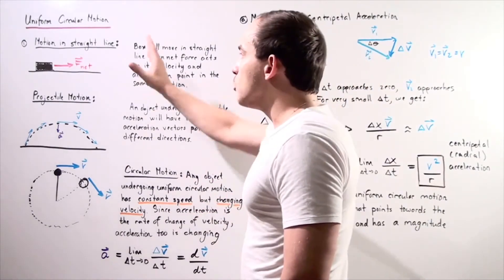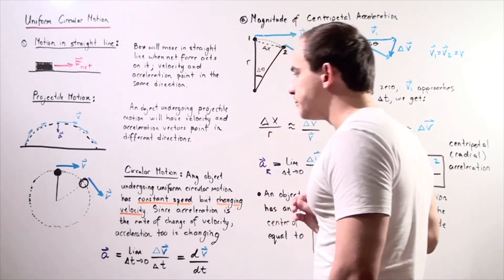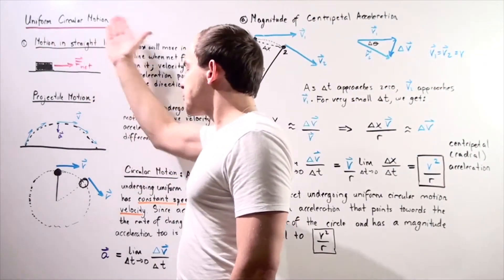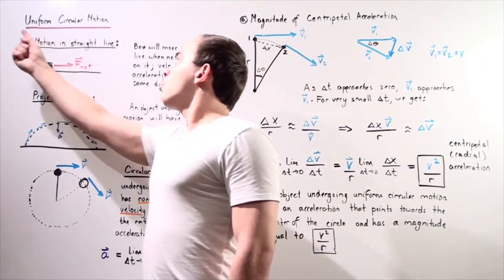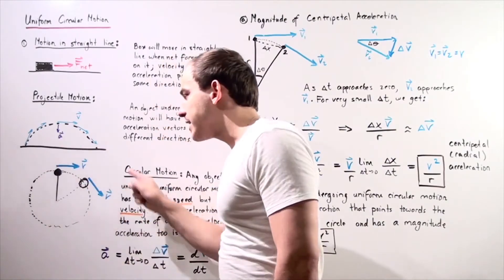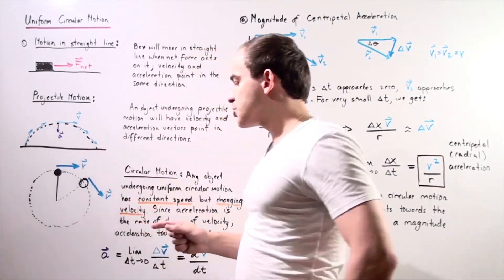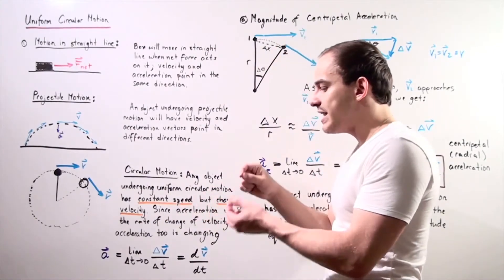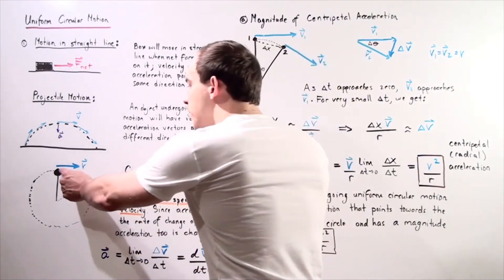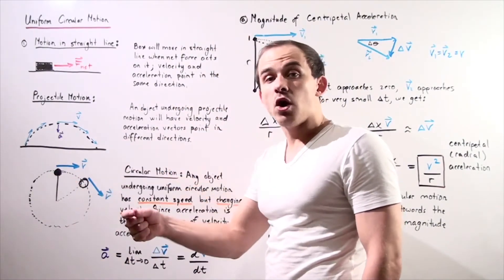Now for objects moving in one dimension, that's pretty much always true. So now let's talk about uniform circular motion. The word uniform simply means that our object has the same exact speed throughout the motion. Let's suppose I take a massless string, attach it at one end to a ball, center my string, and spin my ball.